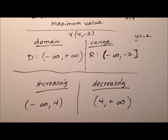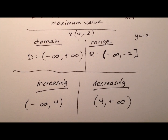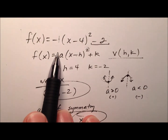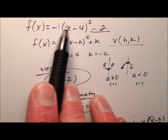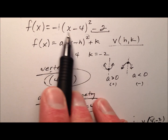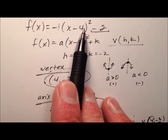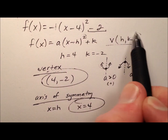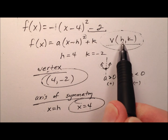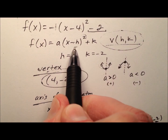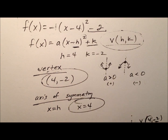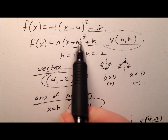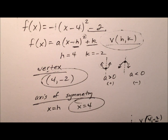And it'll be decreasing starting at 4 and heading up to positive infinity. So here are the last pieces: our original function was f of x equals negative 1 times the quantity x minus 4 squared minus 2. We found the vertex using the formula — the ordered pair h, k, where h is the horizontal shift and k is the vertical shift, in terms of transformations or translations.